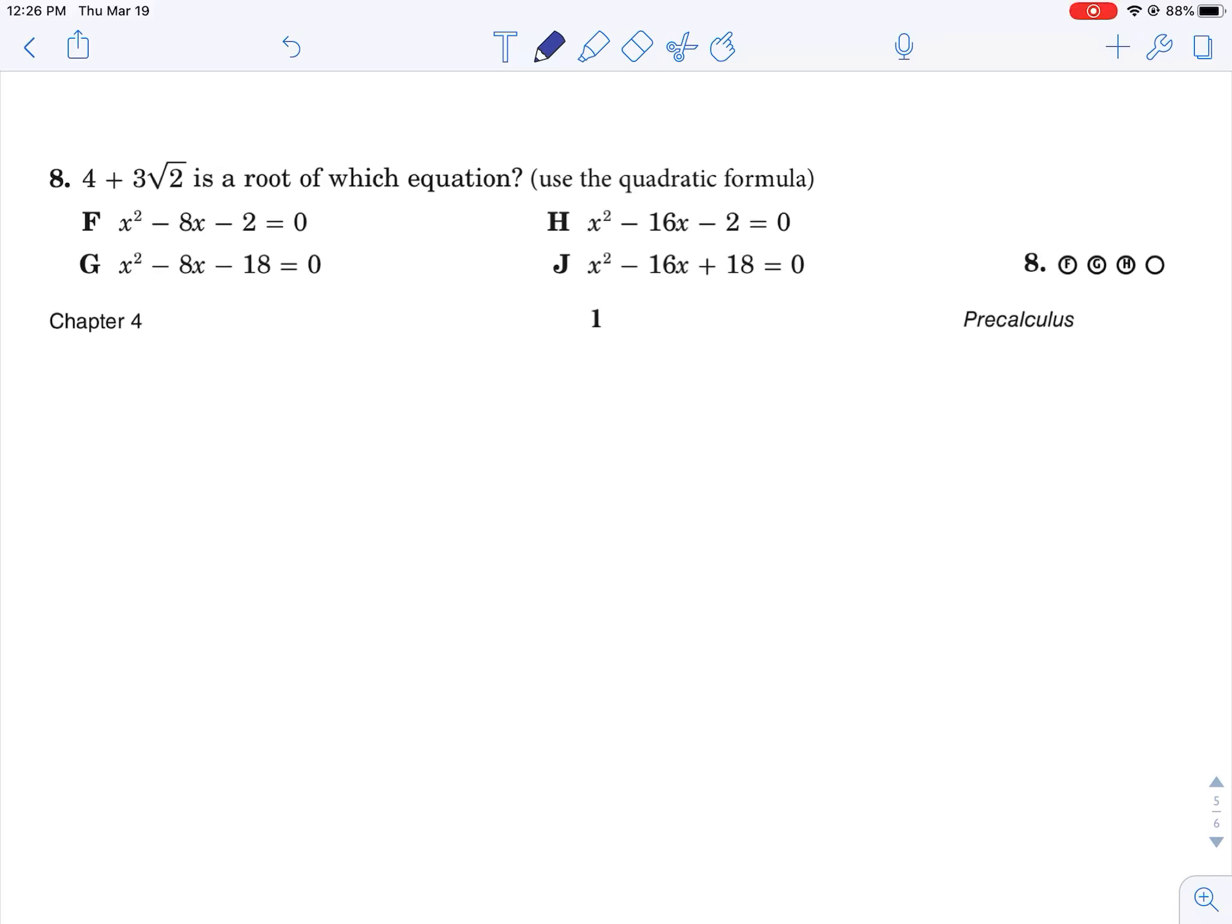What we know is that if 4 plus 3 radical 2 is a root, its conjugate 4 minus 3 radical 2 is also a root. So what you're going to do is take x minus 4 plus 3 radical 2 and x minus 4 minus 3 radical 2.